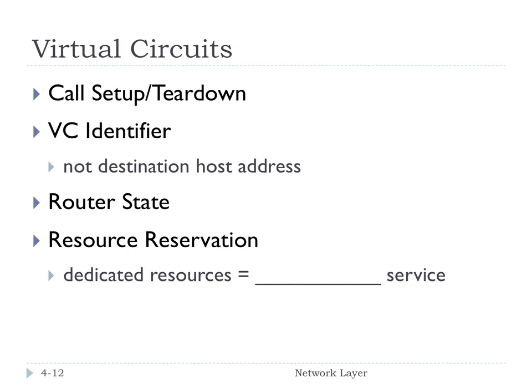Virtual circuits work in this connection-oriented way, where there is this idea of a call setup and a call teardown. In virtual circuit networks, the circuits are defined — the source-destination paths are defined based on a virtual circuit identifier, not the host address. This requires router state: every router on the source-to-destination path maintains state for each passing connection. And the cost of this is that because you've got resource reservation, you have dedicated resources for a certain virtual circuit.